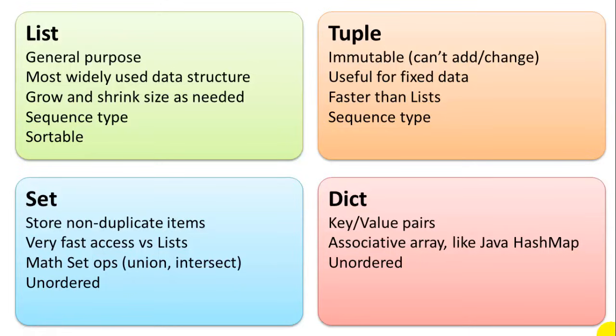The set, you can store non-duplicate items, so it's good for storing unique items in a set. And it's also very good for doing mathematical comparisons to sets. Union, intersect, those kinds of set operations. Dictionaries contain key value pairs. It's like an associative array, similar to a Java hash map. And both sets and dictionaries are unordered, which means they're not sortable, and they're in random order.